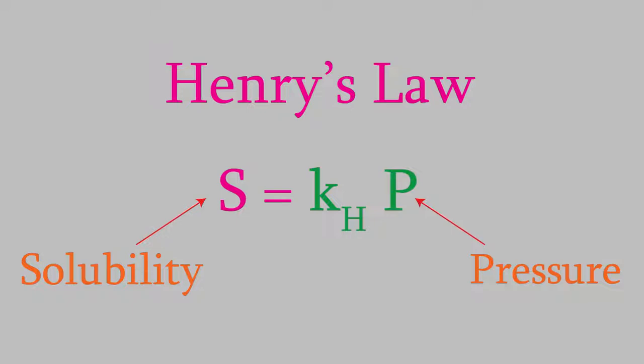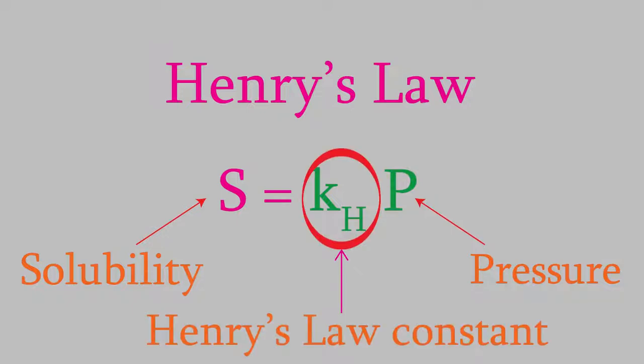The constant is called the Henry's Law constant, and it's different for every combination of solvent and the gas you're trying to dissolve in it. There's a table of these in our textbook. You'll be given them when you need them on a test or on the homework, so you won't need to memorize these.